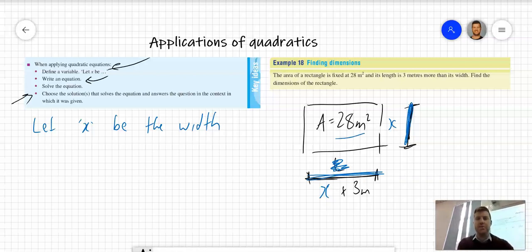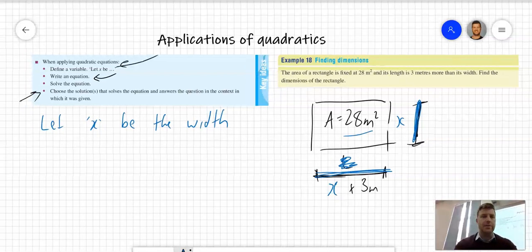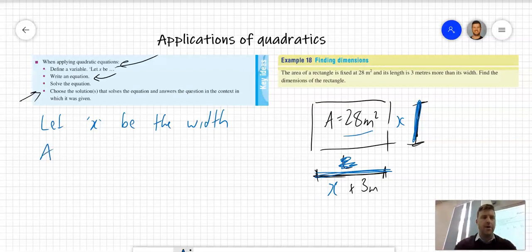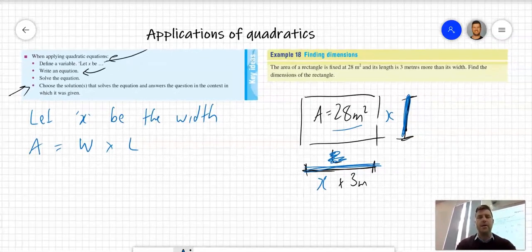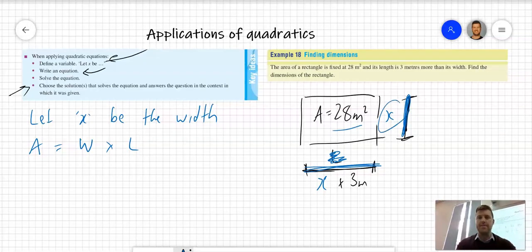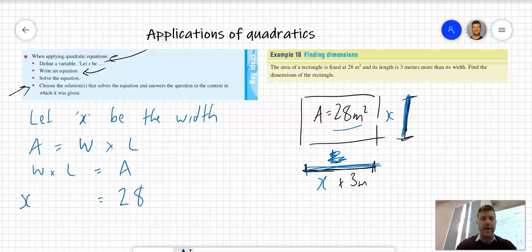The area of a rectangle is width times length, or length times width. I want to write it so I've got x, x plus 3, and 28 in that equation. Let's have width times length equals area. We know the area is 28, the width is x, and the length is x plus 3.